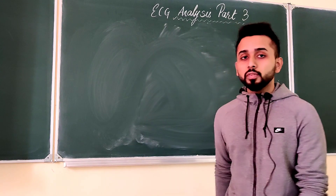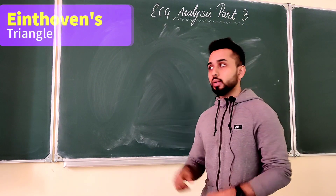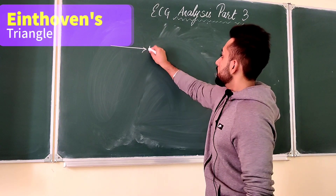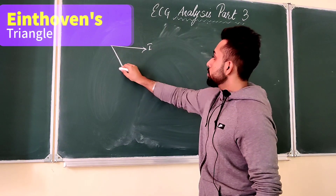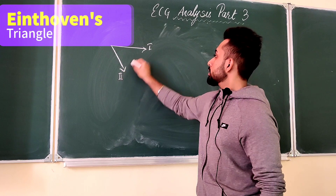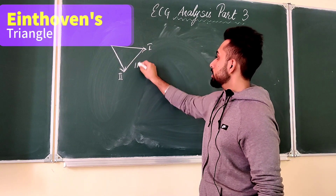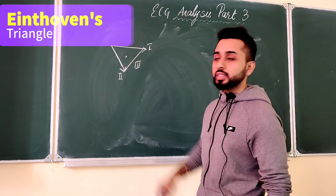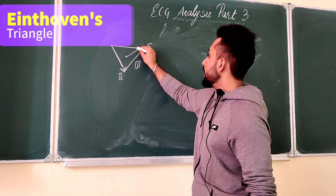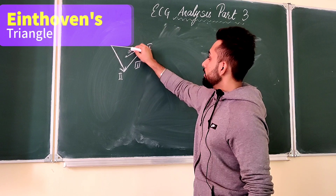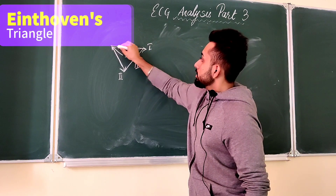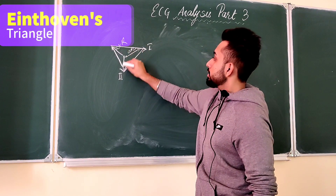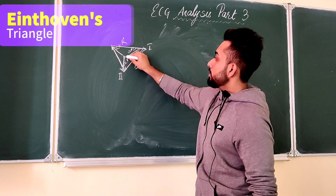In part 2, we spoke about Einthoven's triangle, which I'll draw for you once again. This was Lead 1, Lead 2, and Lead 3. This point — point 0 — was Wilson's central terminal. From here we have AVR, AVL, and AVF for foot.